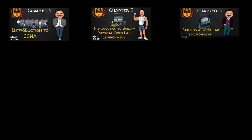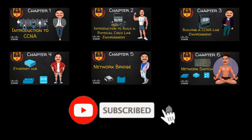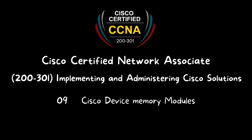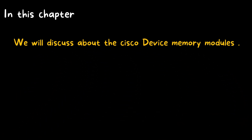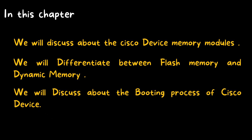Welcome to iRush Academy, an unlimited learning platform. Please subscribe to the channel for more videos. Welcome to CCNA 200-301: Implementing and Administering Cisco Solutions, Chapter 9 — Cisco Device Memory Modules. In this chapter, we will discuss Cisco device memory modules, differentiate between flash memory and dynamic memory, and discuss the booting process of a Cisco device.